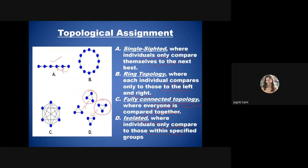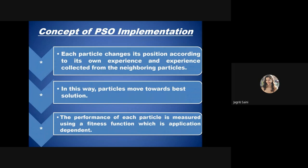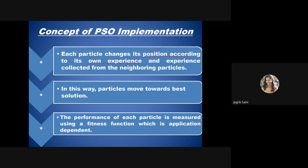Based on all gathered information — gBest, pBest, and lBest — we move to implementation. In PSO, two things vary for each particle: its position and its velocity, which defines how it moves and how fast. Each particle changes its position according to its own experience and information from neighboring particles. They share information to determine the best fitness value and keep improving after every iteration, measured by the fitness function of the problem space.